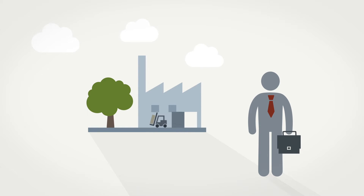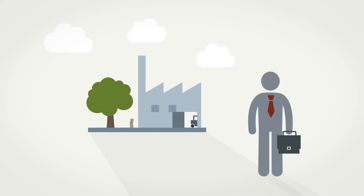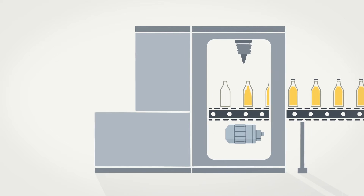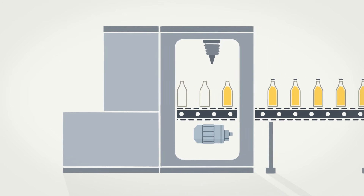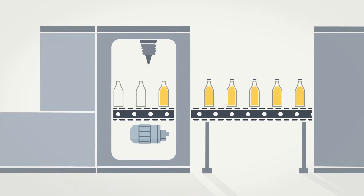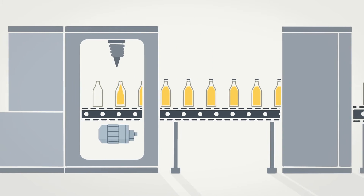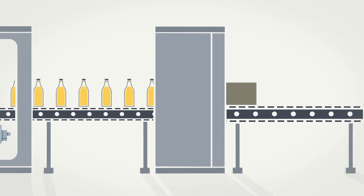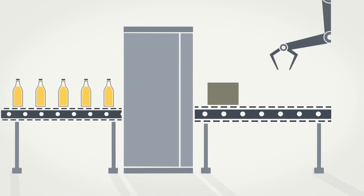As an industrial plant operator, you have to manage your energy consumption efficiently, today more than ever. The crucial step in doing this is to create transparency in all energy flows and energy consumption. Only when you know where, when, and how much energy you are consuming, can you take specific steps to save energy and consequently costs in your production processes.